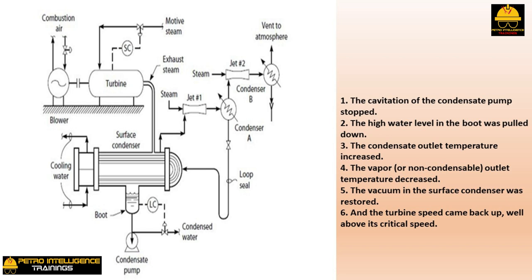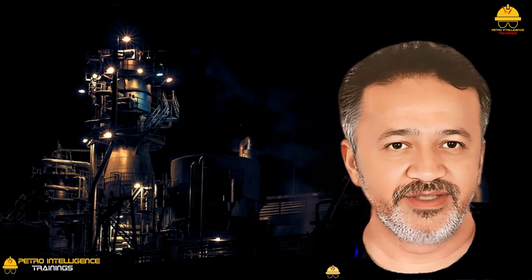During the evening, operators decided to increase the combustion airflow from the blower by opening the suction valve. Naturally it requires more work to compress more air, but the turbine could not produce any more horsepower because the governor's speed control valve was already 100% open. So the turbine slowed down — and the only speed it could slow to was its critical speed. The turbine and blower began to vibrate, bearings were damaged, the rotor became unbalanced, a rotating element touched a stationary component in the blower case, the stationary component broke off, and the blower was wrecked.